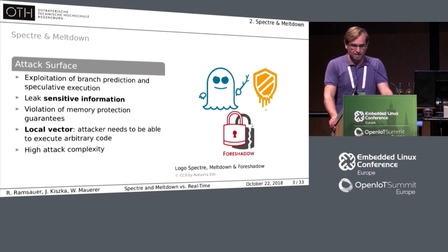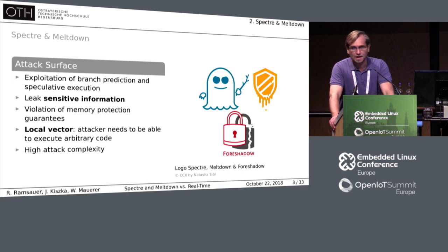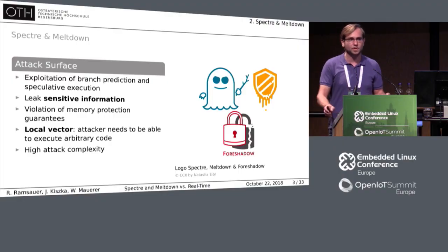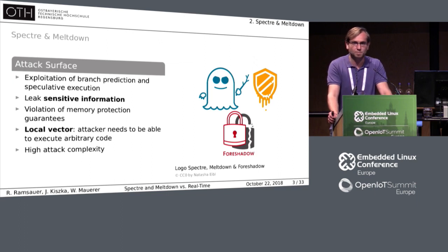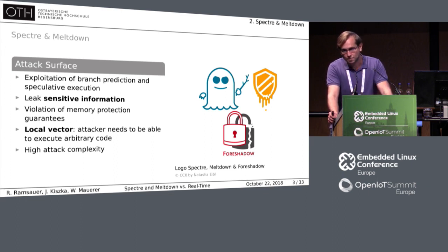The commonality of those bugs is that they exploit speculative execution — they exploit branch prediction units together with the behavior of caches and time-constrained side-channel attacks. With this, attackers are able to leak sensitive information, and this breaks guarantees given by memory management units such as memory protection. Attackers may be able to read not only memory of other processes, but also memory from kernel space, and under certain conditions, even arbitrary physical memory. Nevertheless, we need to keep in mind that these are local vectors only, so an attacker needs to be able to execute arbitrary code on an affected system.